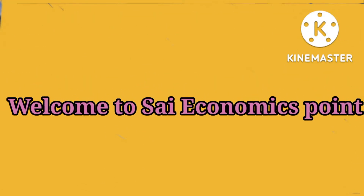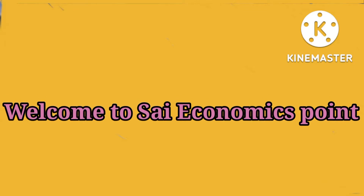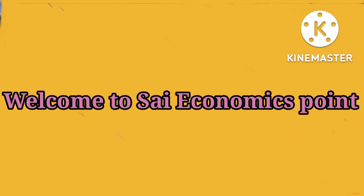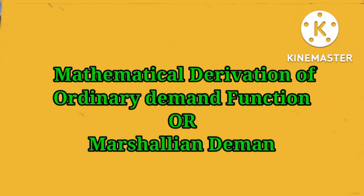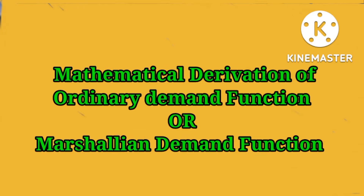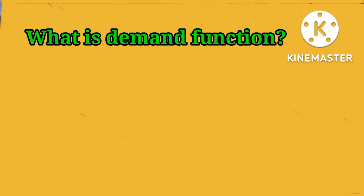Namaskar, welcome to Sci-Economics Point. In today's lecture we'll discuss the mathematical derivation of the ordinary demand function. So first we'll discuss what you mean by demand function. Demand function depicts the functional relationship between the quantity demanded and the level of prices and real income of the consumer. There are two types of demand function.